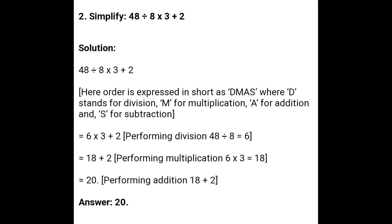One more example is on your screen children. See: 48 is divided by 8 into 3 plus 2. So in the first step you will divide 48 by 8. You have got 6. In the second step you will multiply 6 into 3. You will get 18. Then in the third step you will add 18 and 2. You have got 20. So in this way children you will solve your question. First you will do division, then multiplication, then addition, and at last you will do subtraction.